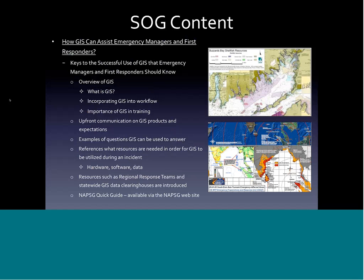Let's start with how GIS can assist emergency managers and first responders. The document gives a brief description of what GIS is, since not everyone is familiar with it. There's a section with examples of the type of questions GIS can answer — especially helpful if emergency managers haven't used GIS before. Examples include: Has the oil reached the shore yet? What is the status of booming operations? What resources are at risk? You can look at environmentally sensitive areas, shoreline, endangered species habitat — those are the types of questions GIS can answer.